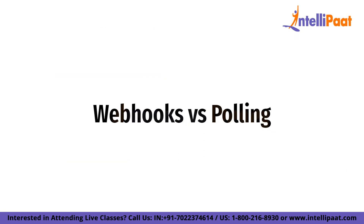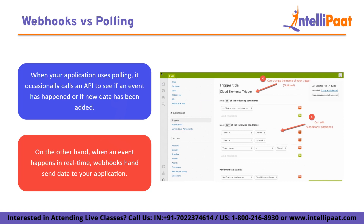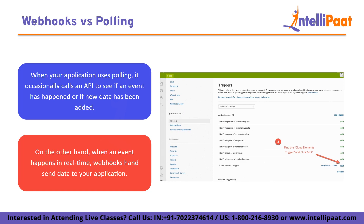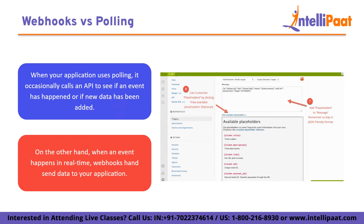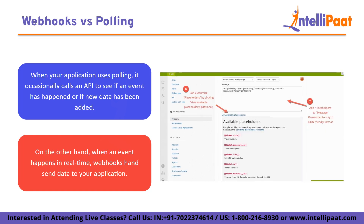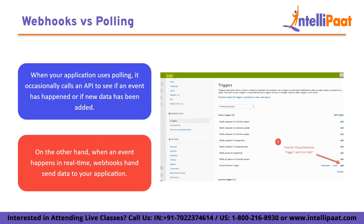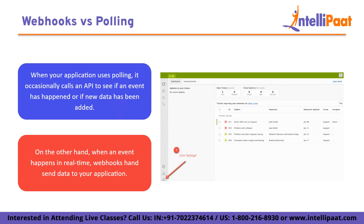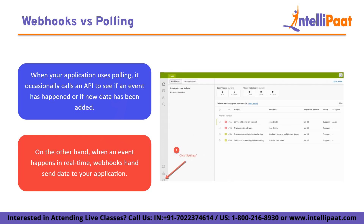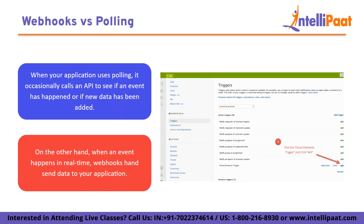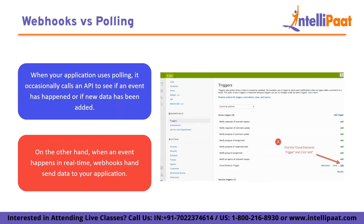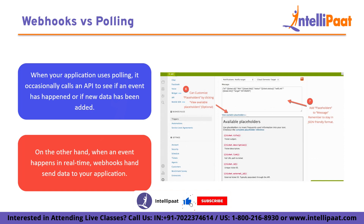Now let us look at webhooks vs polling. When your application uses polling, it occasionally calls an API to see if an event has happened or if new data has been added. On the other hand, when an event happens in real-time, webhooks hand data to your application. Polling is like visiting the post office to see if you have any new mail. By providing the postman with your home location using webhooks, you can essentially have mail delivered to your house each time you receive new mail. While webhooks only make network queries when there is new information, polling uses more resources because it may take several network requests before new information is found.